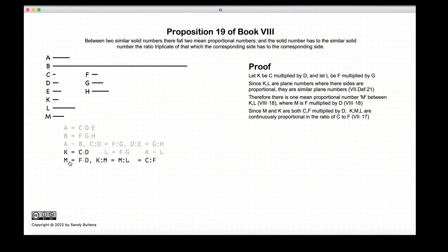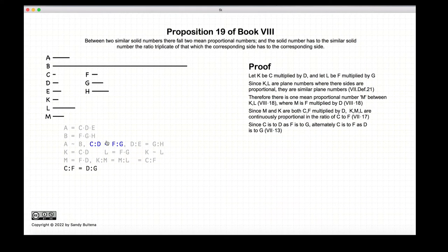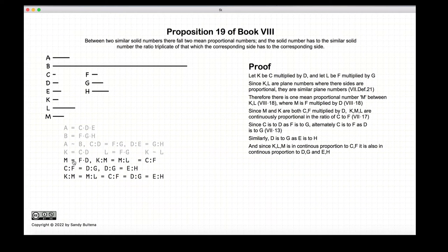Looking again at C to D equals F to G from our original supposition, we can manipulate these ratios using Proposition 13 from Book 7 to get that the ratio of C to F is equal to the ratio of D to G. Similarly, D to G is equal to the ratio of E to H, again by Proposition 13 of Book 7. So K:M to M:L is equal to C to F, which equals D to G, which equals E to H — all of these ratios are equal.